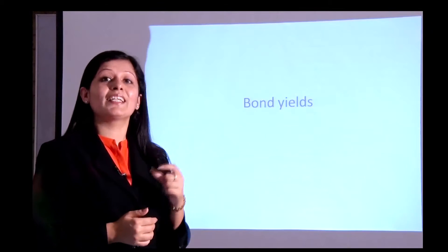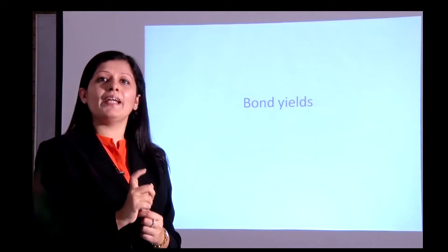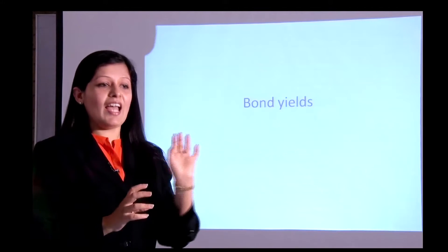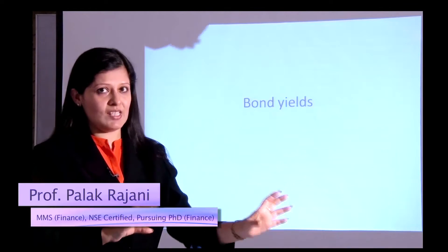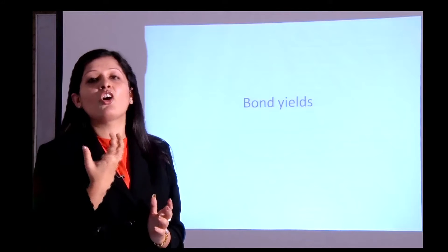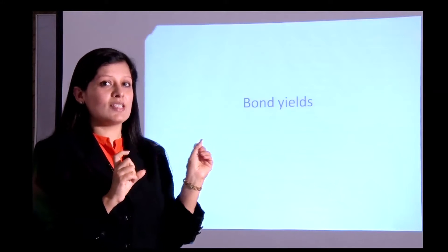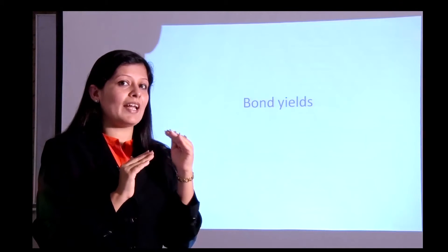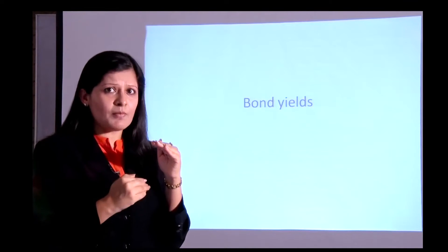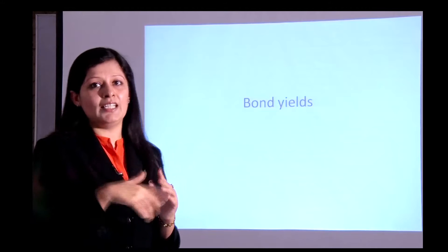Till now I gave you examples where the rate of return or required rate of return was given, and you compared the market price with the intrinsic price. Now if the market price of the bond is 9600, and I buy at this price, the return I get is called the yield. Even though I want 8%, the bond was priced at 9605 but available at 9600, meaning the bond is giving something more than my required rate of return — that is the yield.